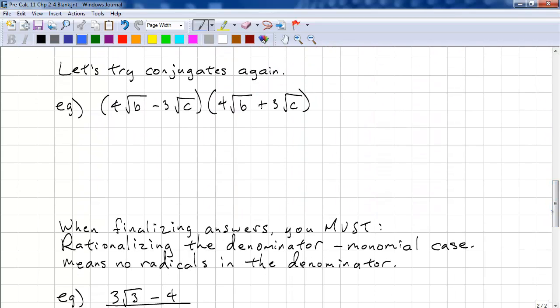Next, let's try conjugates with variables. 4 times 4 is 16. Square root b squared. And 4 times 3 is 12 square root bc. Minus 3 times 4 is negative 12 bc. And negative 3 times 3 is minus 9. And square root c squared. So we have 16 absolute value b. We have plus. We have negative. They cancel out. And we're left with minus 9 absolute value c.